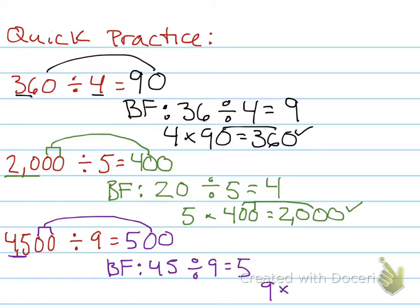Divisor times quotient should give me my dividend. Let's find out. Nine times five is 45. How many zeros? Two. One. Two. Is that my dividend? Yes, it is. There we go.